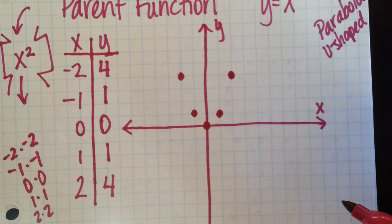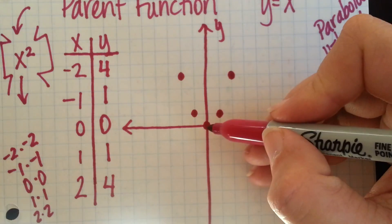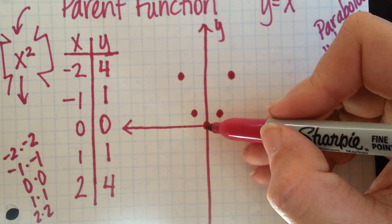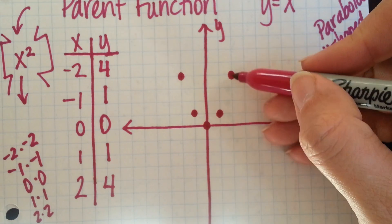This is the basics of a parabola. The very, very basics. Notice when we went over 1, we go up 1. When we went over 2, we go up 4.